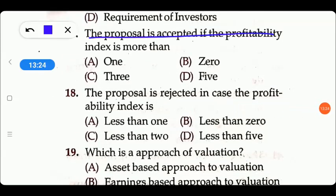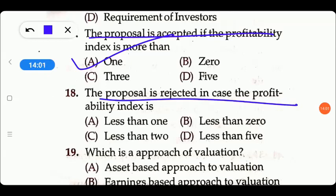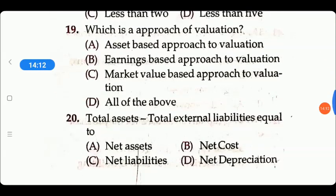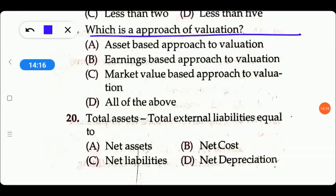Next question: a proposal is accepted if the profitability index is more than? Options are 1, 0, 3, or 5. A proposal is accepted when the profitability index is more than 1. Conversely, the proposal is rejected when the profitability index is less than 1. So the right answer is 1.